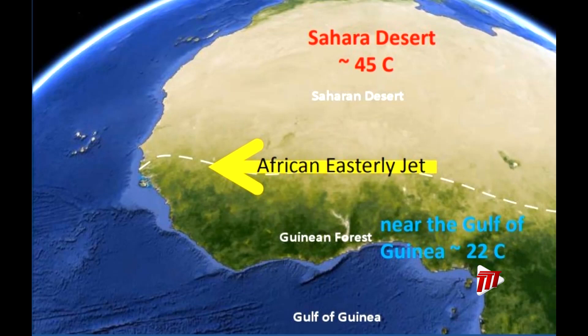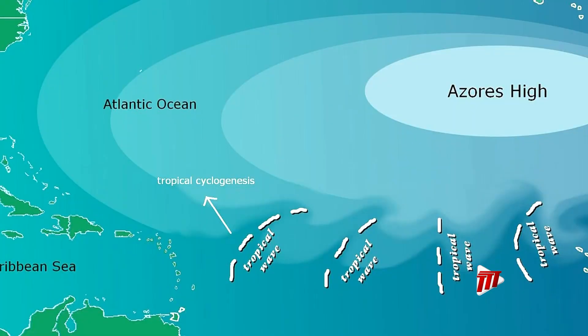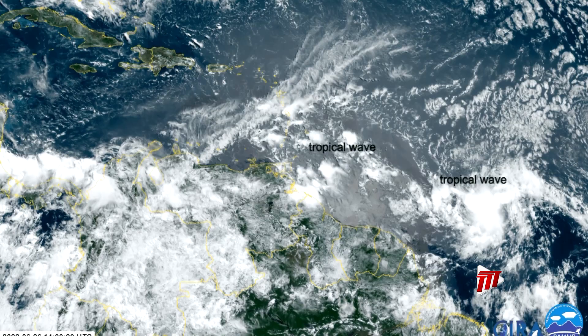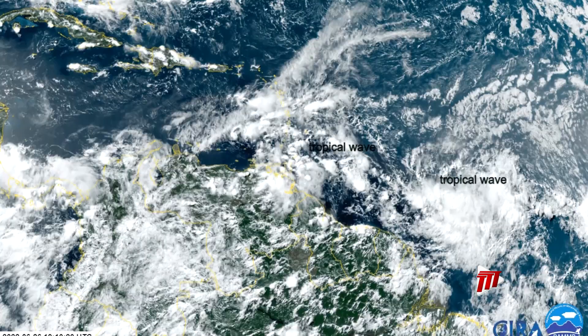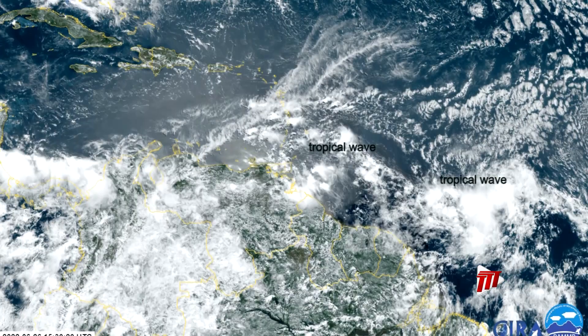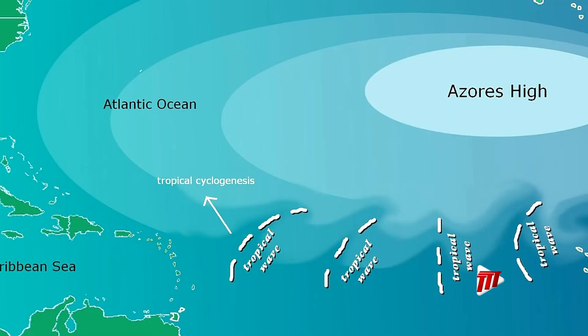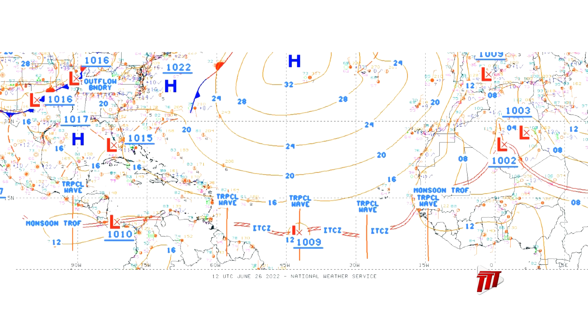Tropical waves form between April and May and October to November, occurring three to four days apart and lasting one week to up to several weeks. They have an inverted V-shape appearing on satellite imagery, extending from north to south along the axis with a wavelength of about 2,500 kilometres, and they extend upward in the atmosphere up to five kilometres.